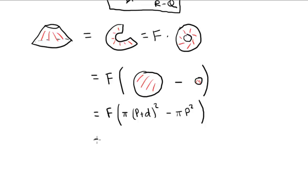And we can multiply out, take out the factor of π from both of these, and get π times f times, well, expand the binomial, we get p² plus d² plus 2pd. Minus p², and the p²'s cancel, and we take out a factor of d, π times d times f times what's left, well, d plus 2p.